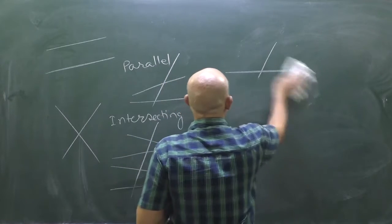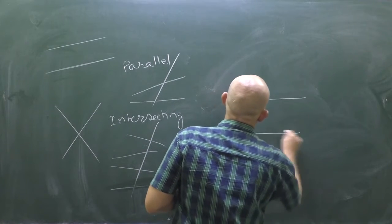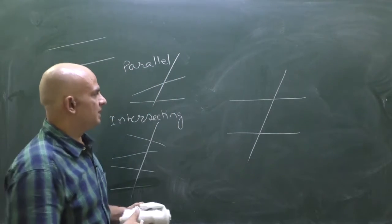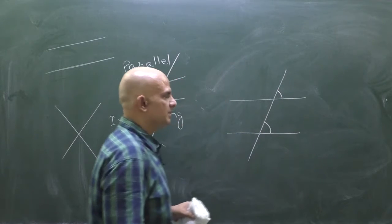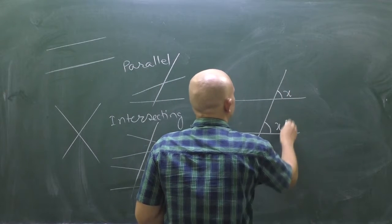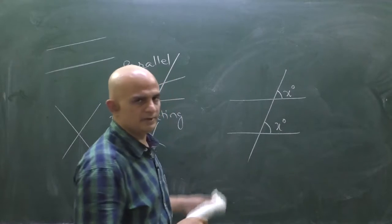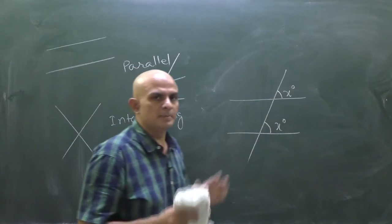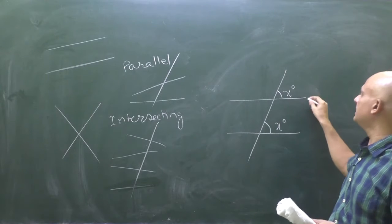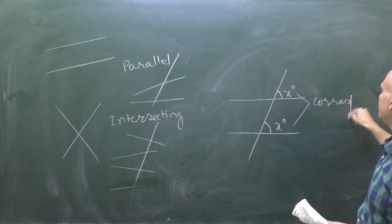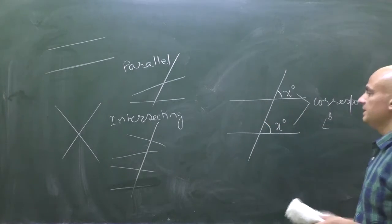Now let's come to a very important axiom: if a transversal line intersects two parallel lines, then certain pairs of angles will be equal. This angle and that angle — these two angles will be equal. If this is x degrees, then that will also be x degrees.